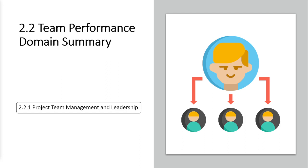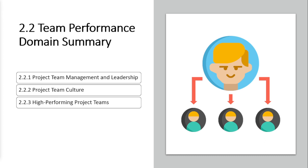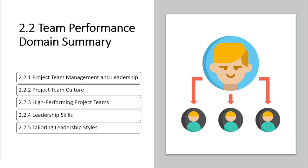The second domain, team performance domain, highlights that project team management and leadership are very important for a project manager. Understanding project team culture, what makes a high-performing team, and how to get there with great leadership skills — tailoring your leadership styles and keeping in mind models like the Hersey-Blanchard situational leadership model — will help you digest this chapter.